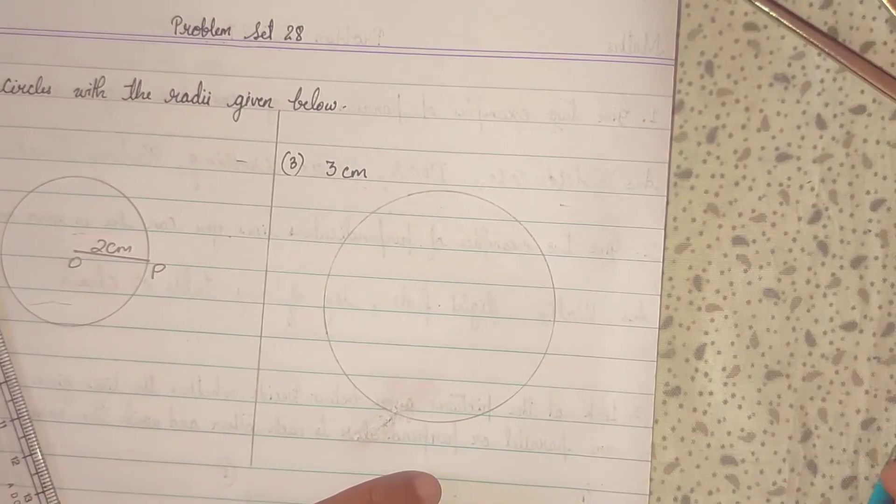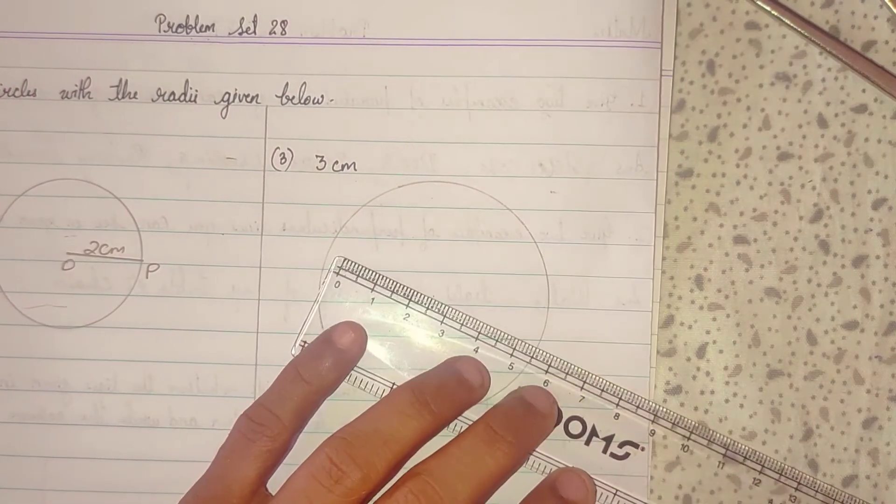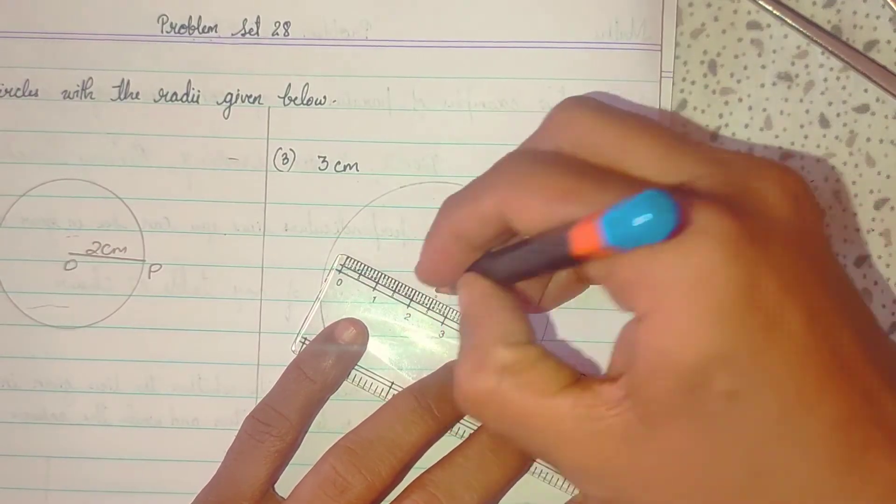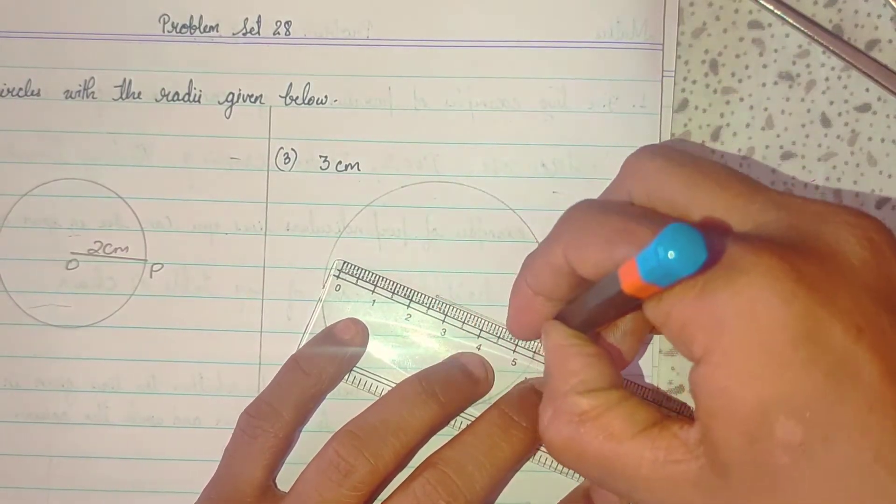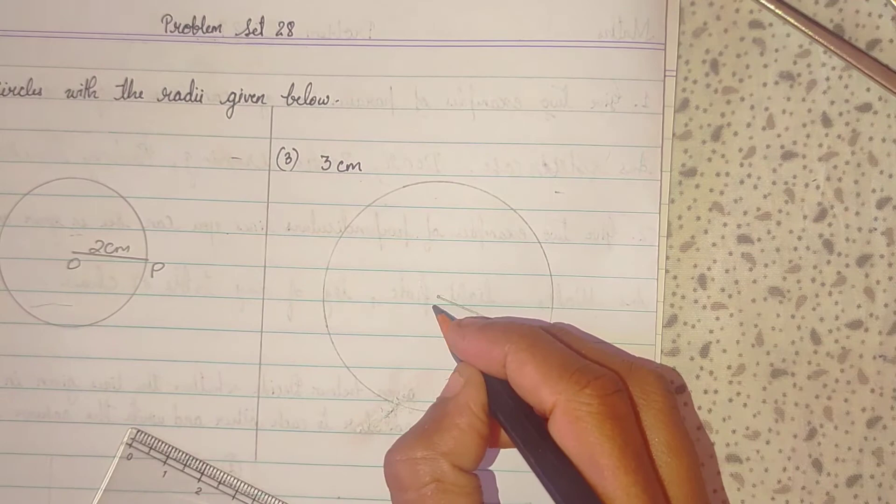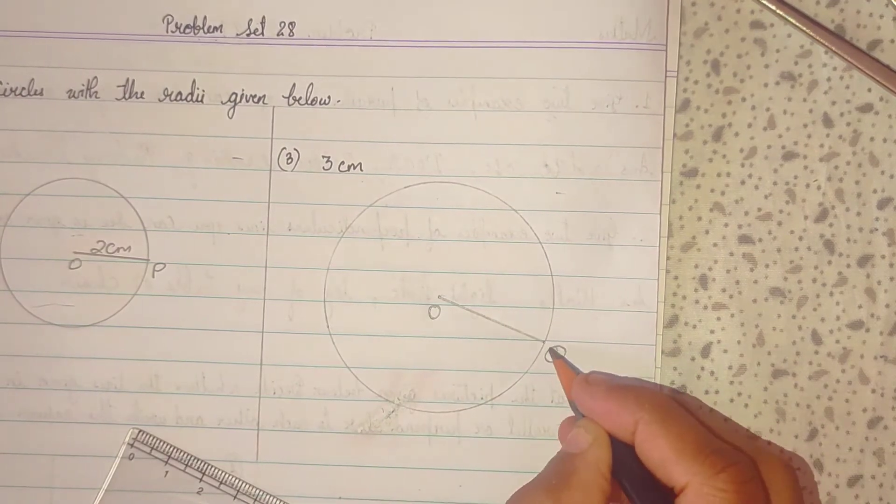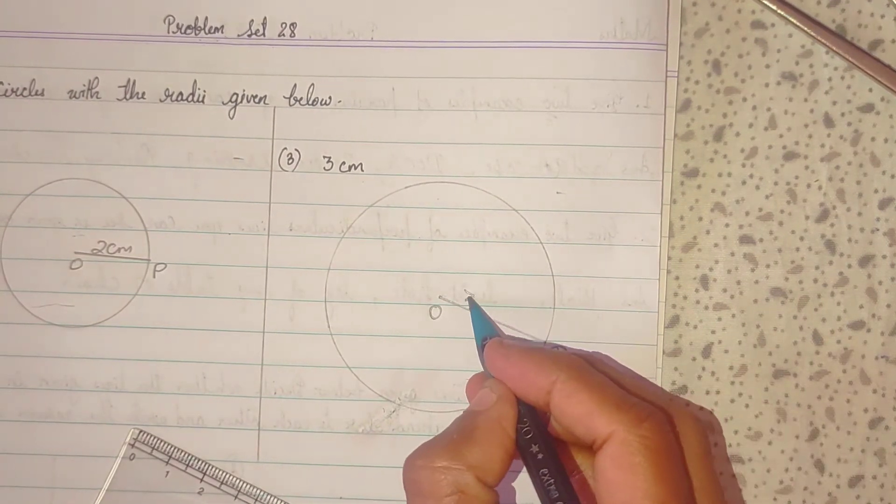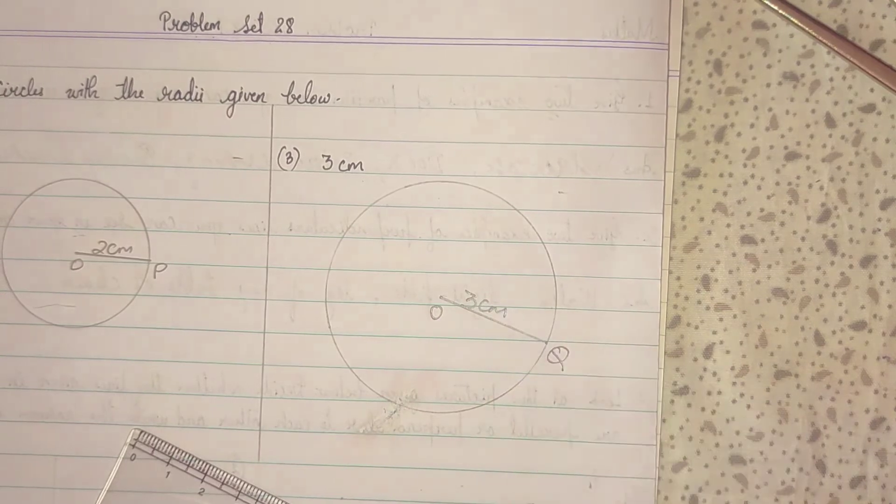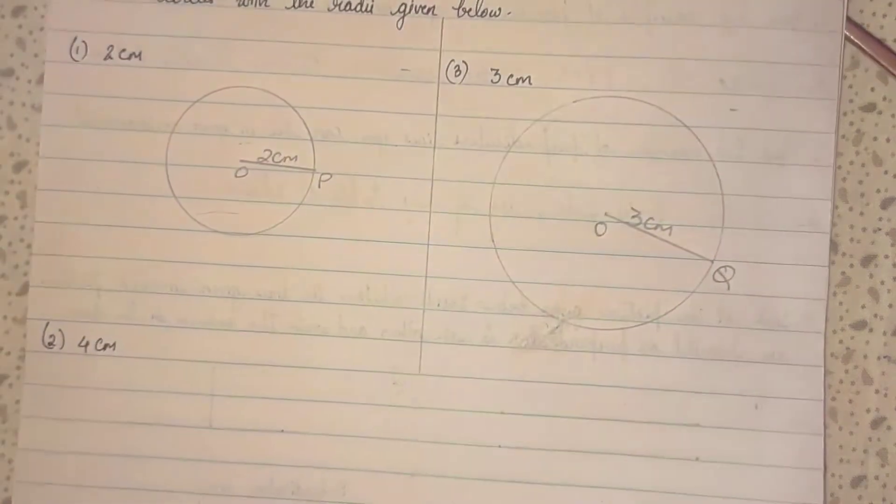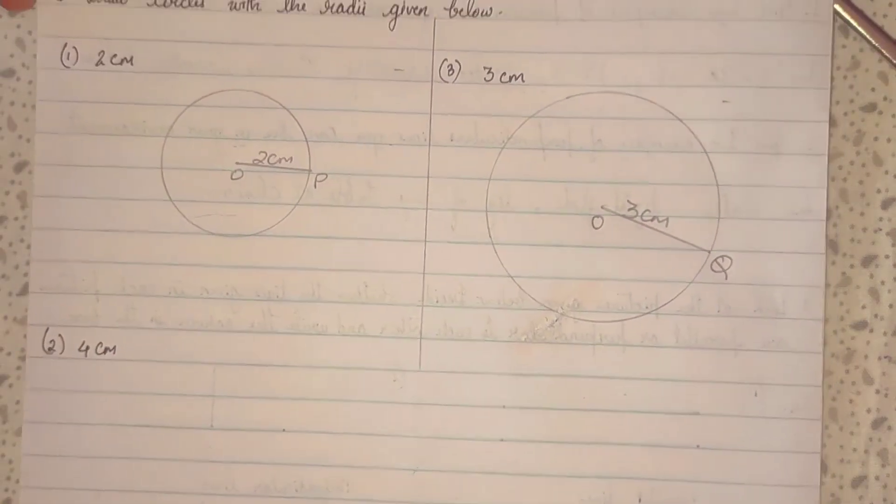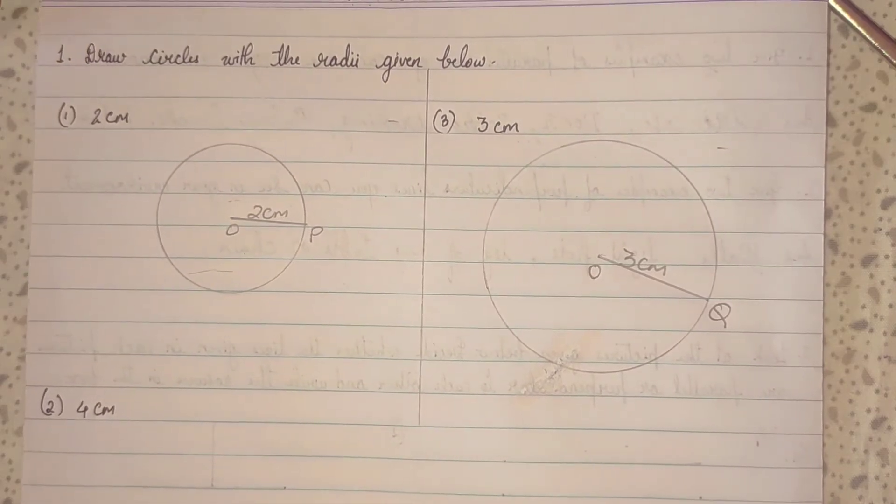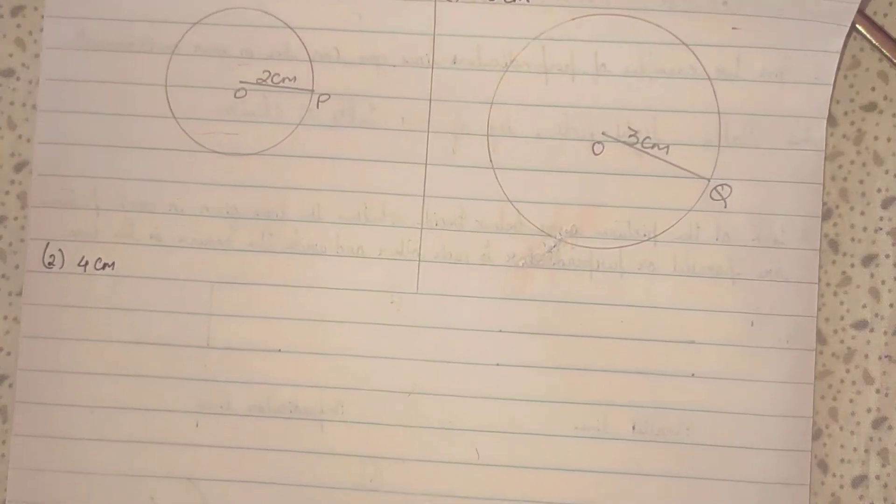And this is your 3 centimeter circle. Draw radius and give it a name, OQ. And then put 3 centimeter. You can name it according to your wish.